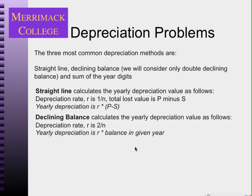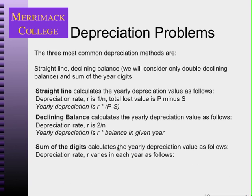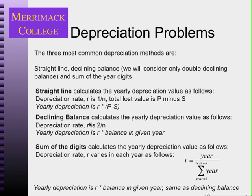The sum of the digits method is more accurate than the straight line. It does the same thing as the declining balance — taking more depreciation at the beginning — but it's not as drastic. It's kind of in between those two extremes. It uses a formula to calculate a yearly depreciation rate that changes each year. In the first year it's one value, in the second year it's a different value, and it's multiplied by the balance in that given year, just like the declining balance does.